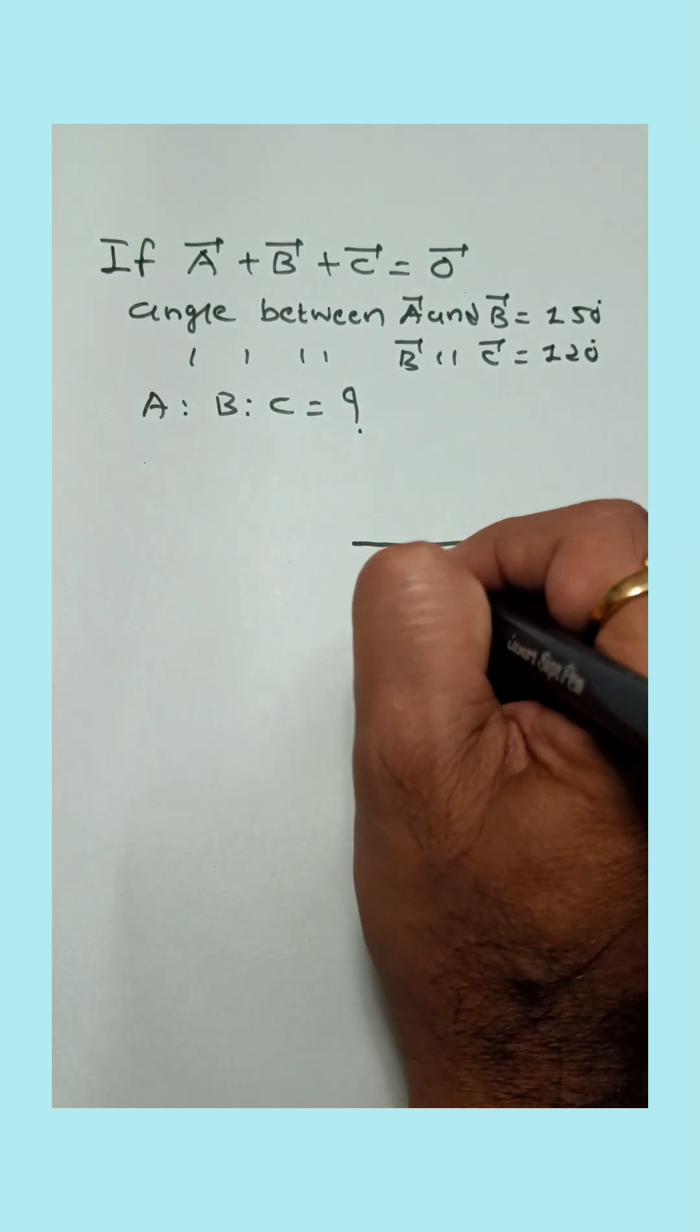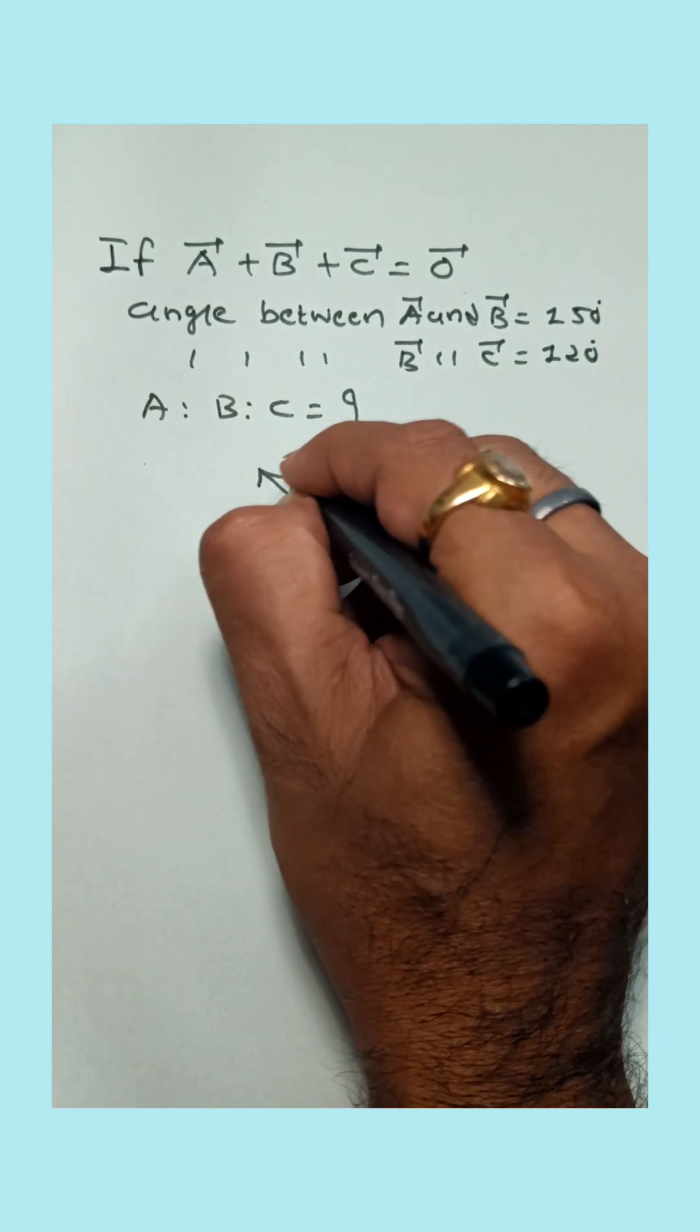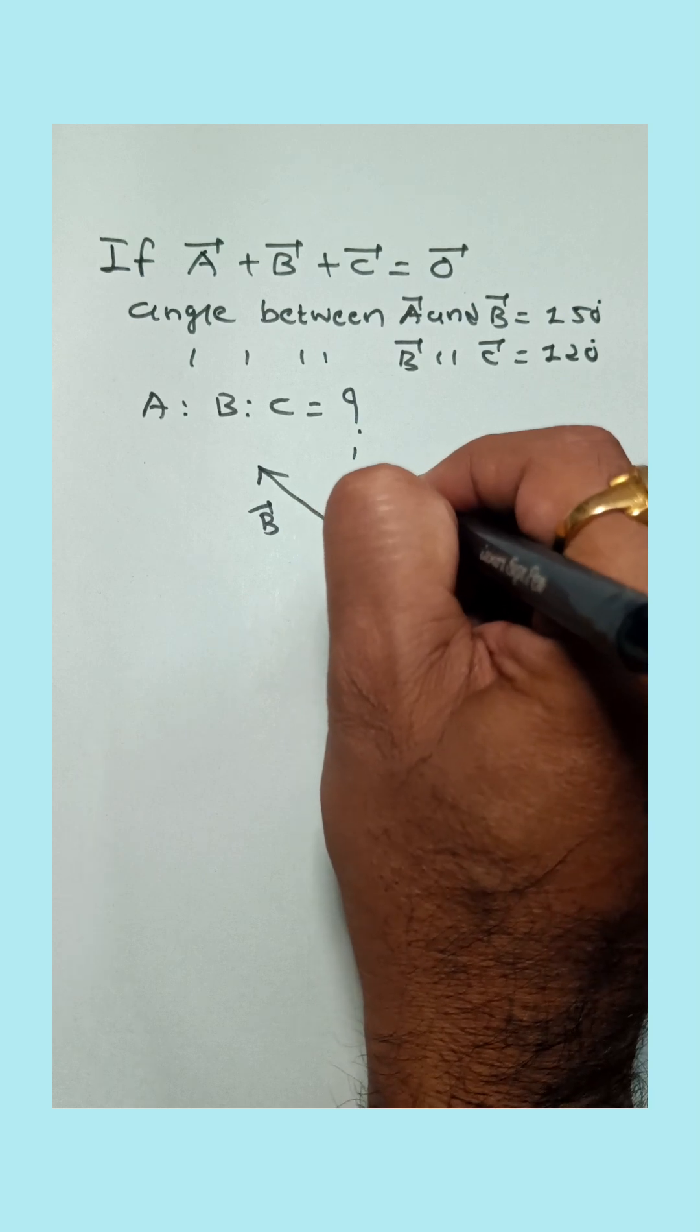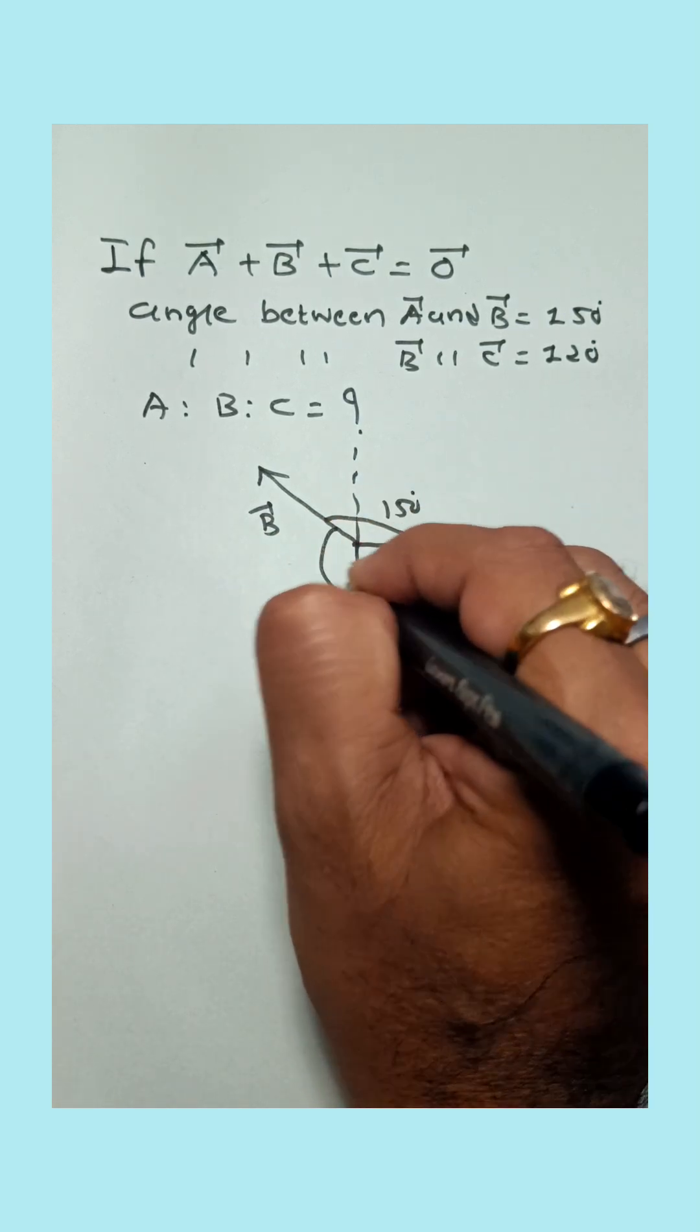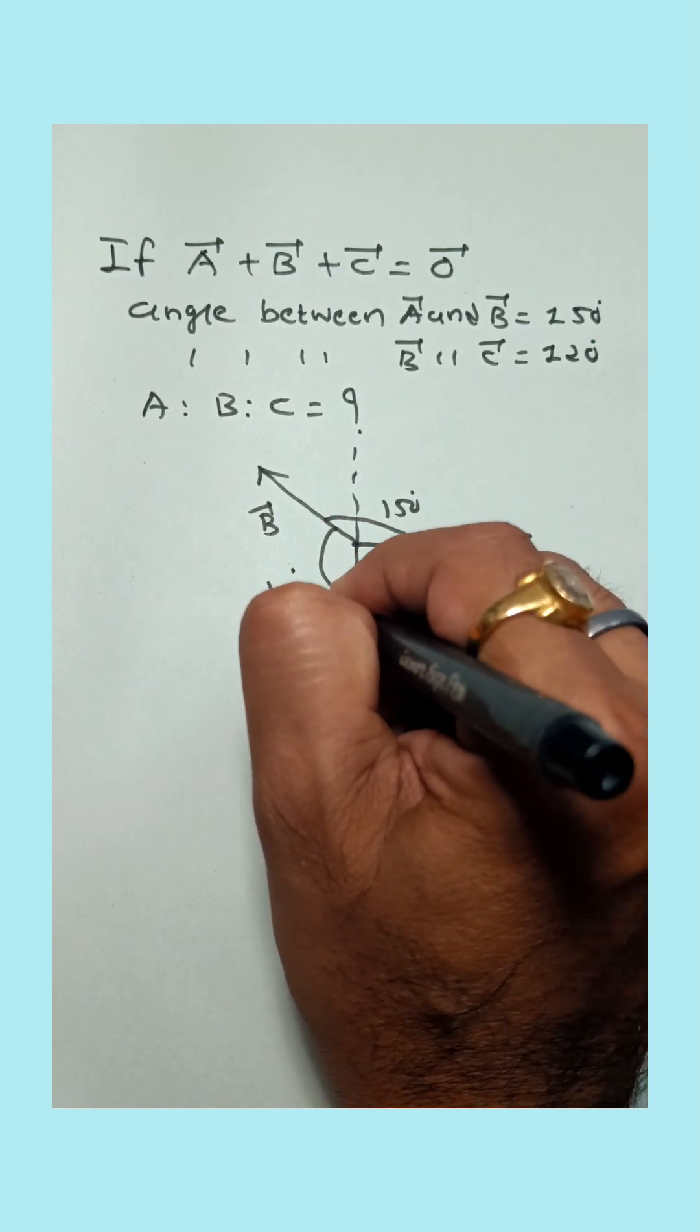Suppose it is the direction of A vector. Angle between A and B, that is given 150°. Angle between B and C, that is 120°. So from the diagram, angle between A and C is 90°.